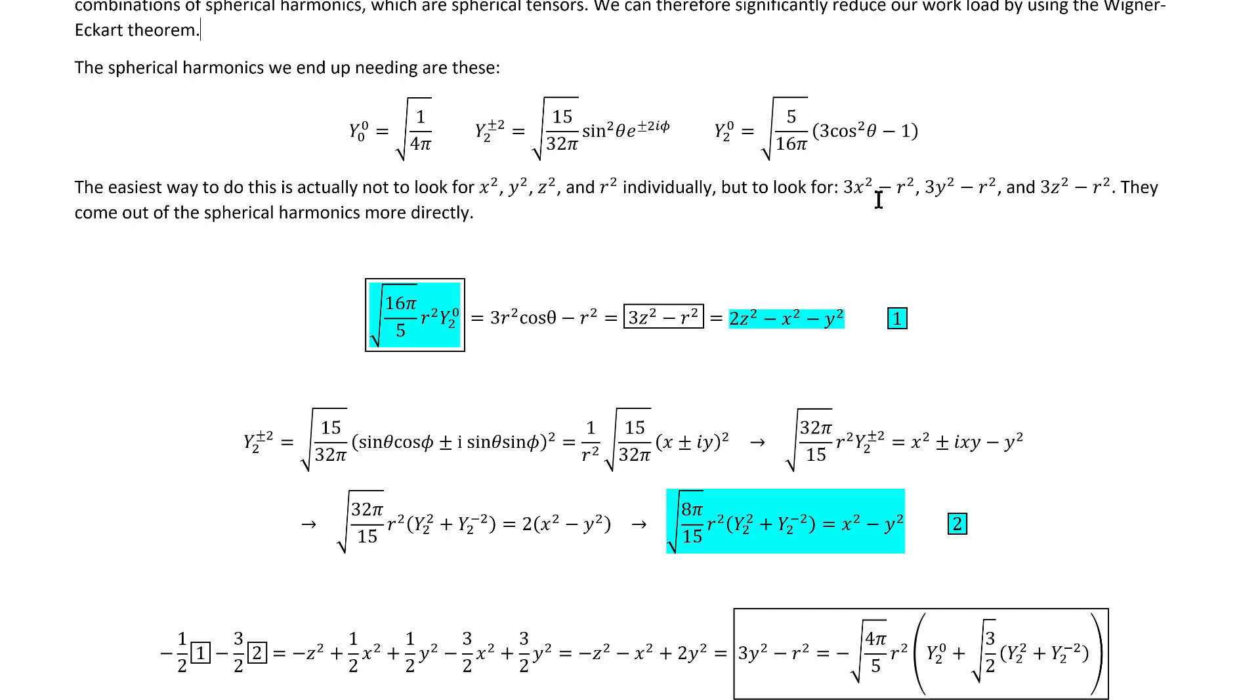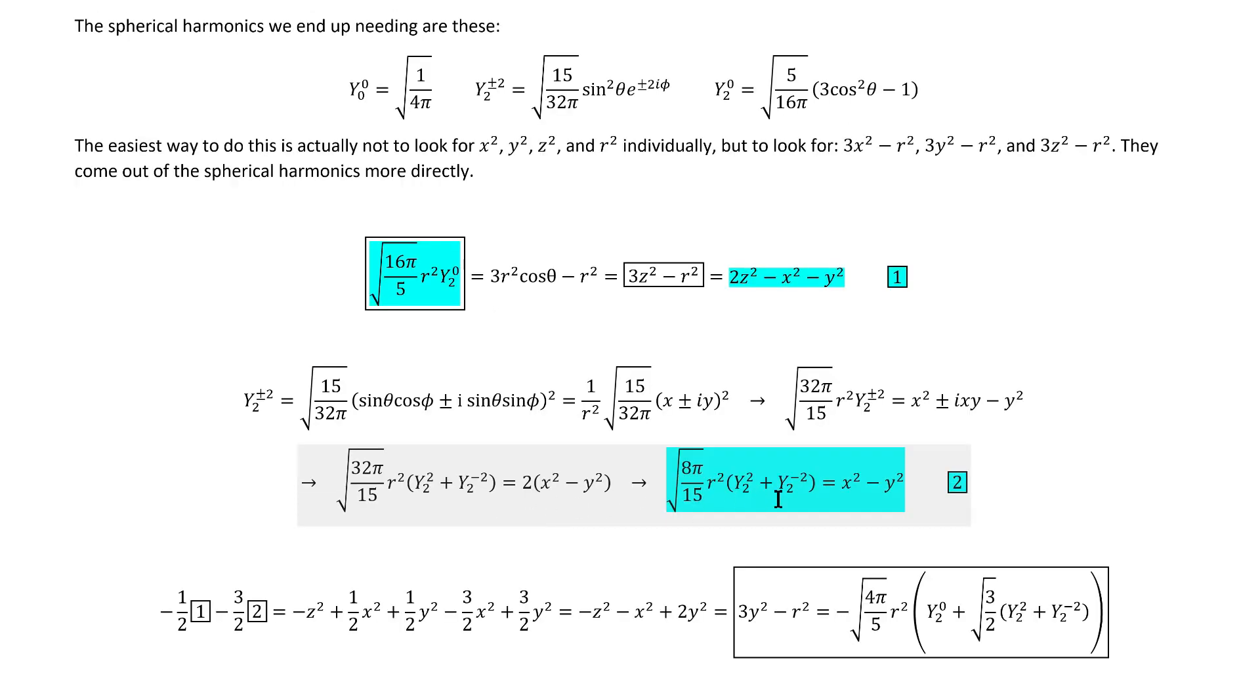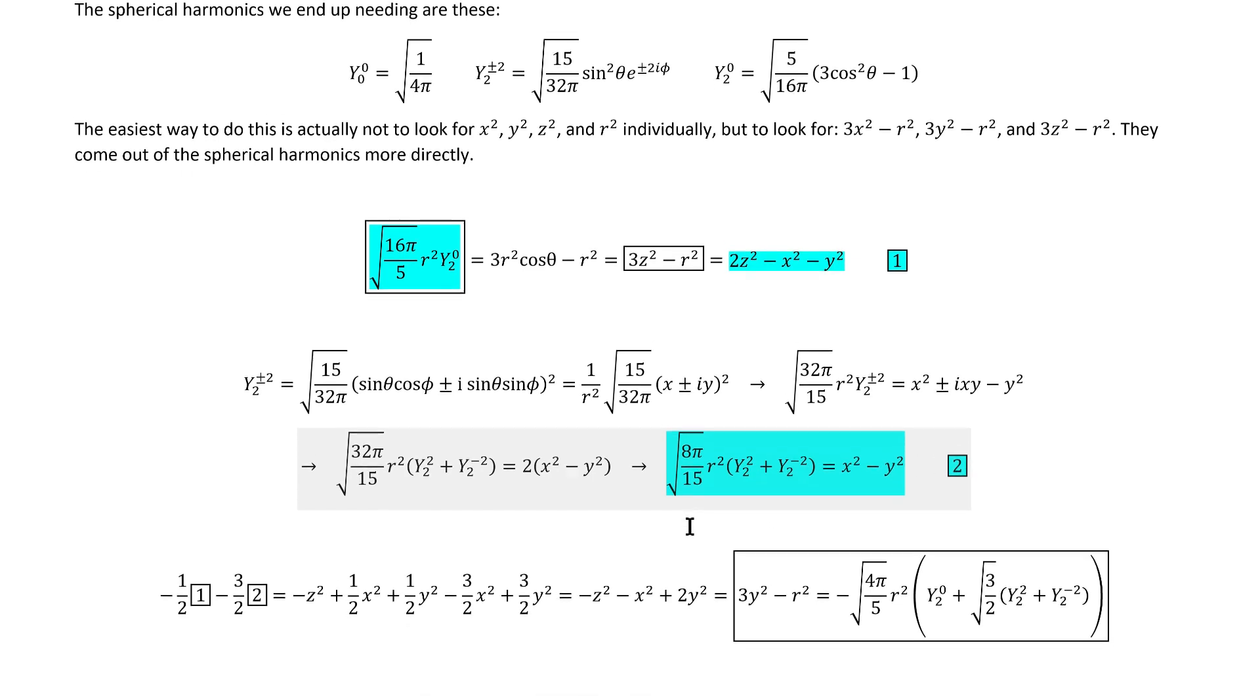Prior experience tells me that the best way to find the two remaining desired linear combinations is to rewrite these spherical harmonics by multiplying and dividing by r squared, which very quickly gets it expressed in terms of x's and y's. We can then solve for and multiply out this square to get us this compelling result. From there, we can see that this combination of spherical harmonics gets us almost all the way to the answer we're looking for. Dividing by two gives us the second key ingredient we need, which I've called equation number two.